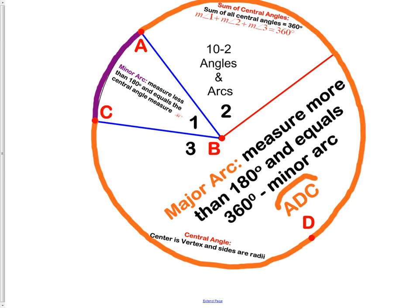Now if you have a minor arc, it makes sense that we have a major arc. A major arc measures more than 180 and equals 360 minus the minor arc. The last part isn't as intuitive as you look at it, but it's an easy calculation. If I knew that angle 1 was 50 degrees, then the major arc that would go from A to D to C would be 360 minus that 50 degrees or 310. The key part though, a major arc measures more than 180 degrees.